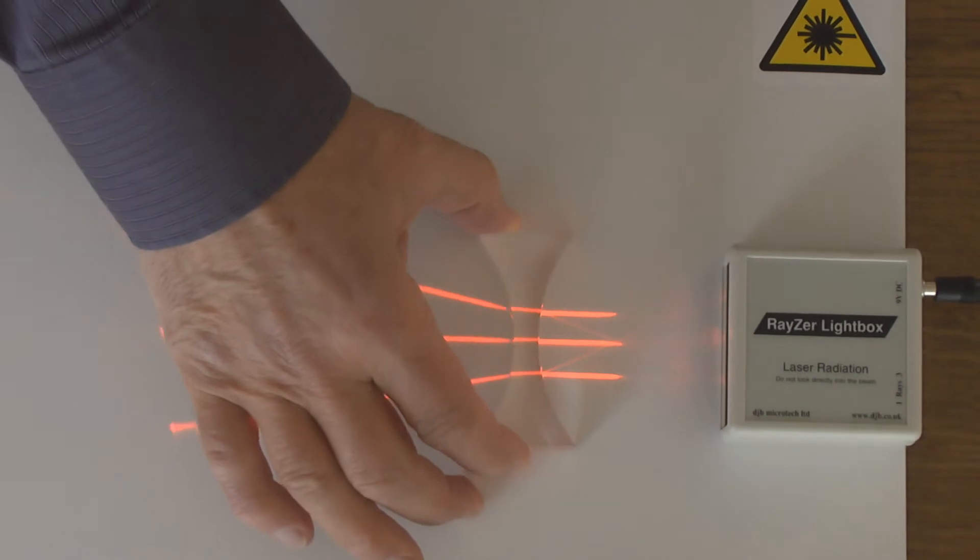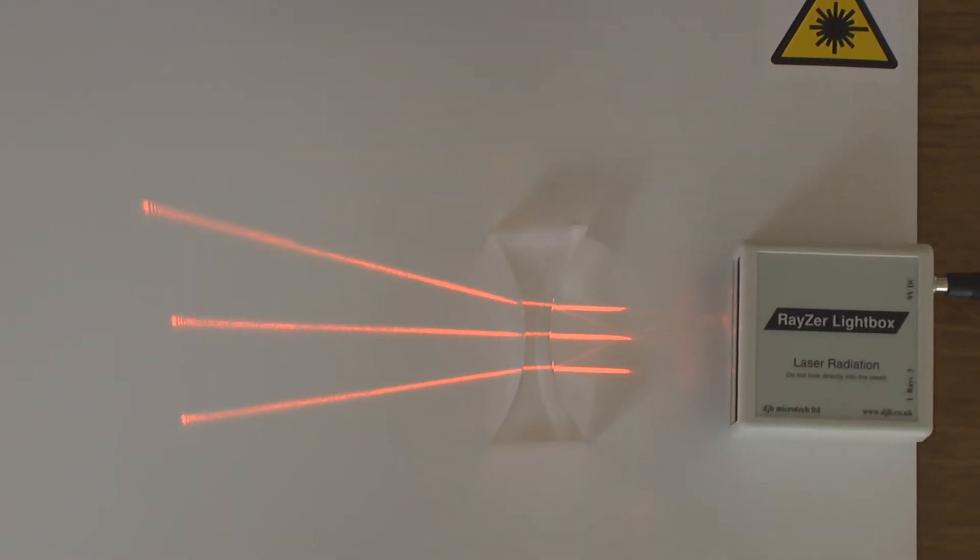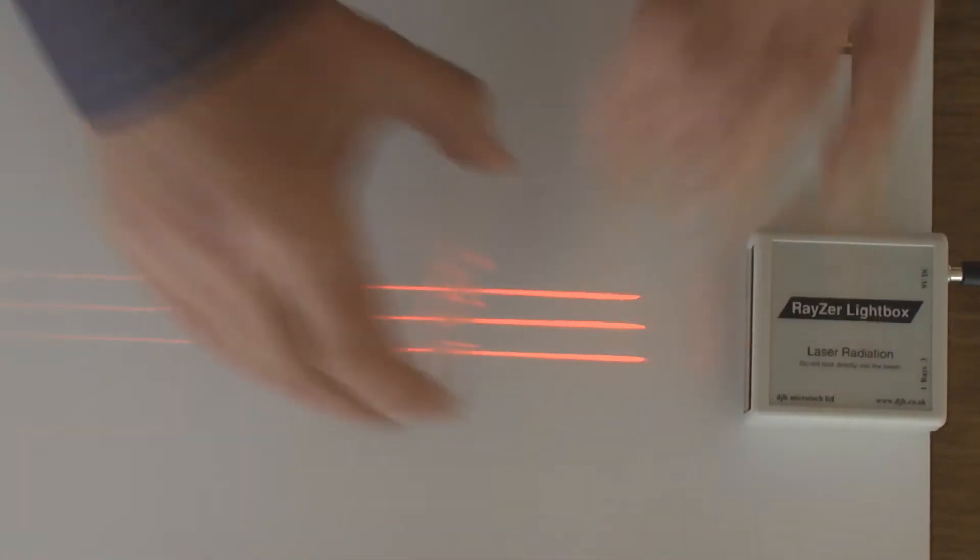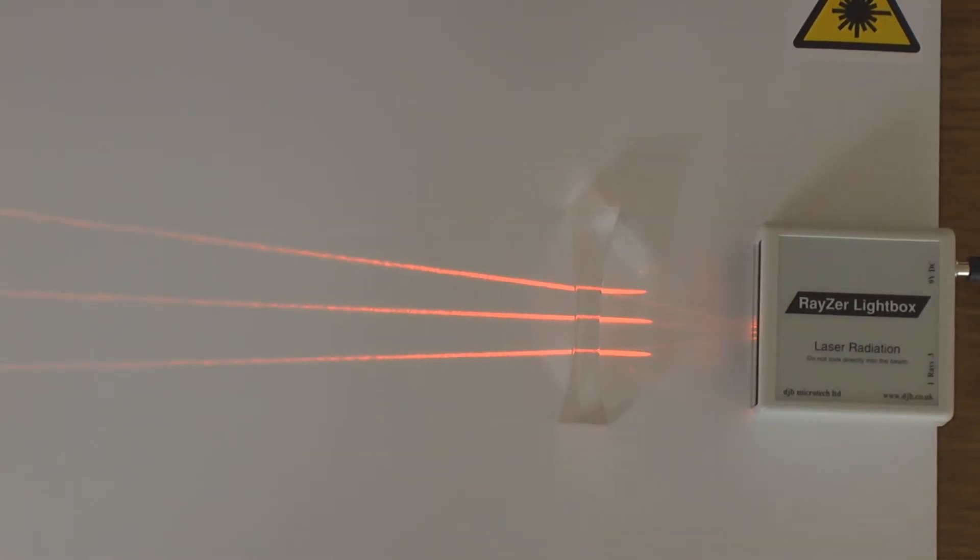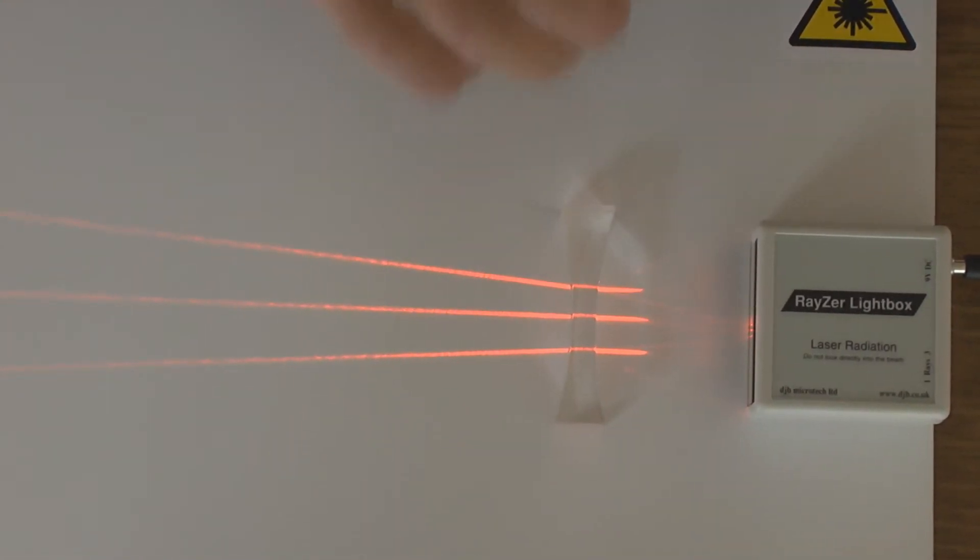Next we'll show a fat and a thin concave lens. Again you can see the difference in the divergence of the beams.